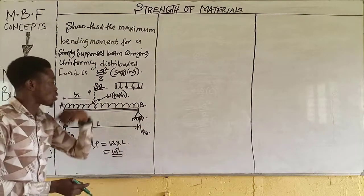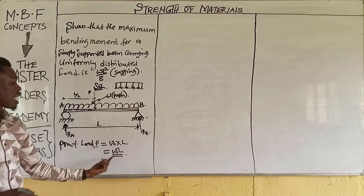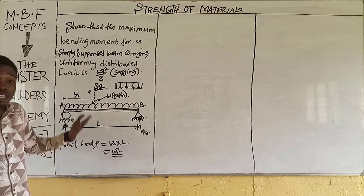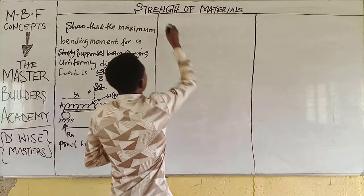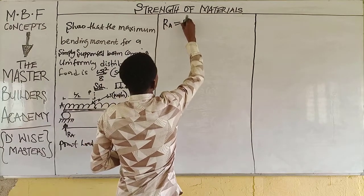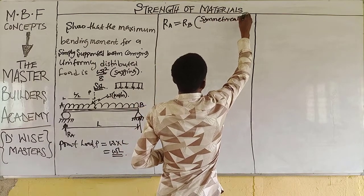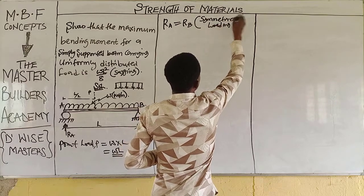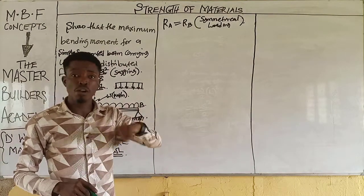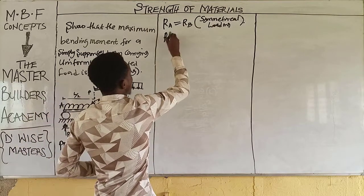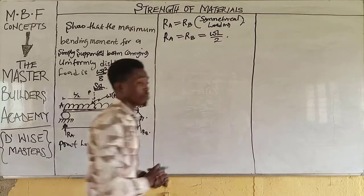Since the beam is symmetrically loaded, the reaction at A equals the reaction at B, so we divide the total load by 2. Therefore, R_A equals R_B, which equals WL over 2.